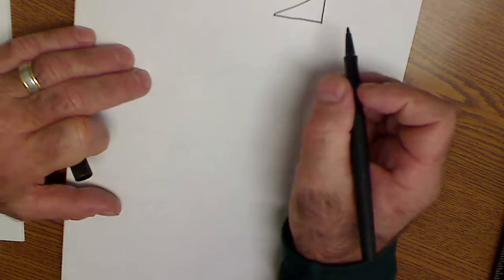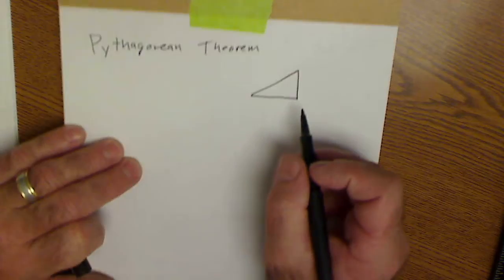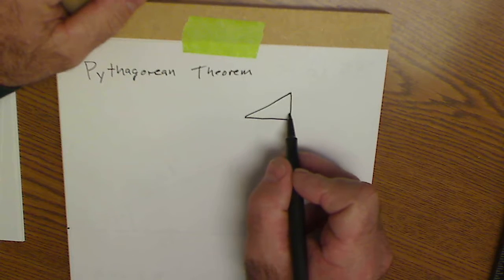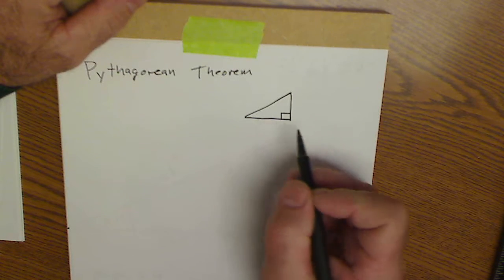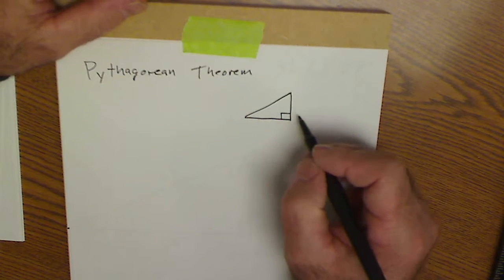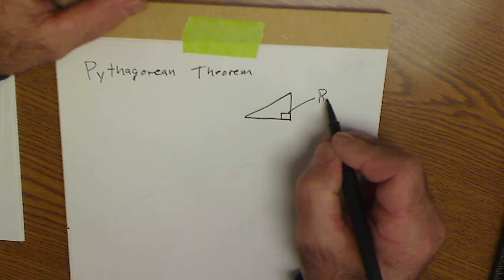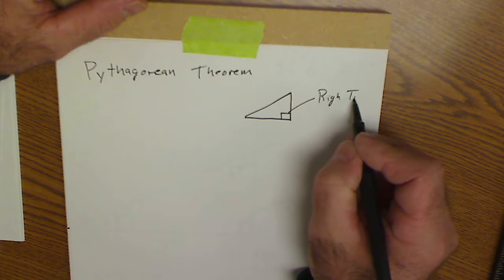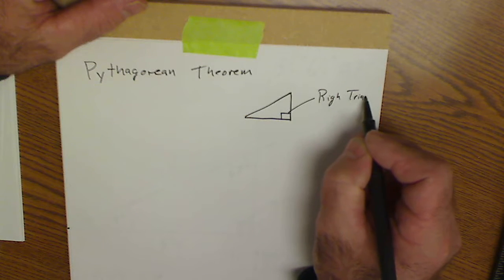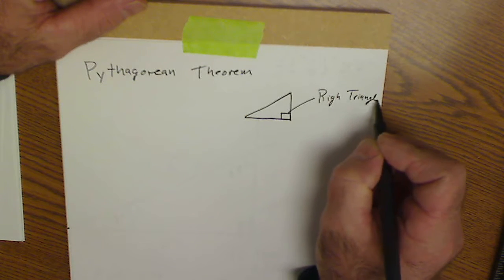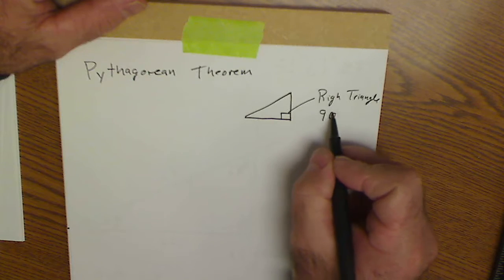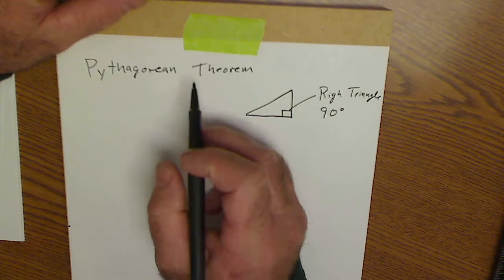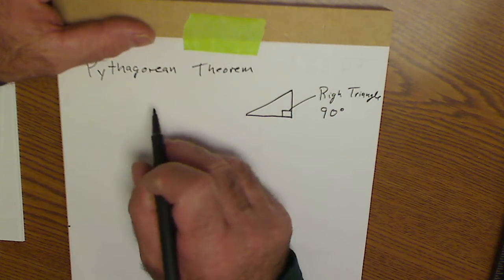The way you denote a right triangle — you put that little box in the corner. This says it is a right triangle, that angle is exactly 90 degrees, and the Pythagorean theorem will work.